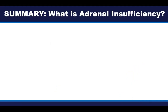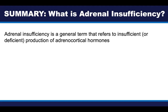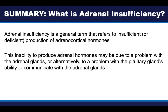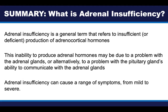To summarize this introductory video: adrenal insufficiency is a general term that refers to insufficient or deficient production of adrenocortical hormones. This inability may be due to a problem with both adrenal glands, or due to a problem with the pituitary gland's ability to communicate with the adrenal glands via ACTH. Adrenal insufficiency can cause a range of symptoms from mild to severe, which will be discussed in much more detail in subsequent videos. This ends the first video — you can now continue to part two.